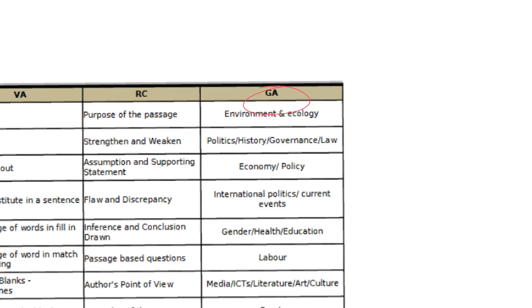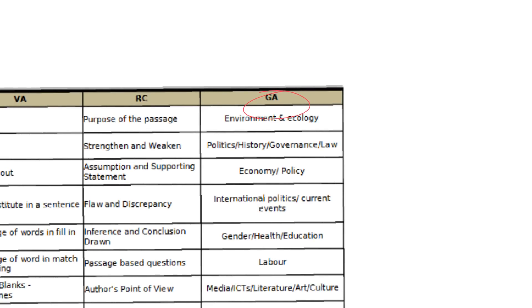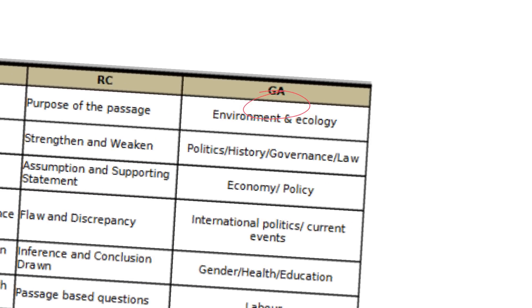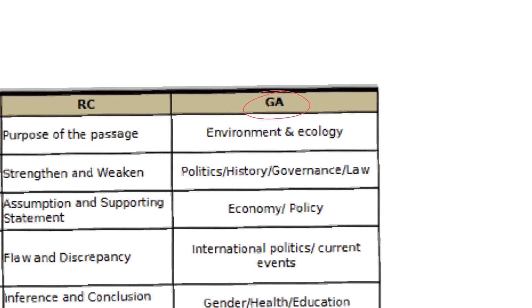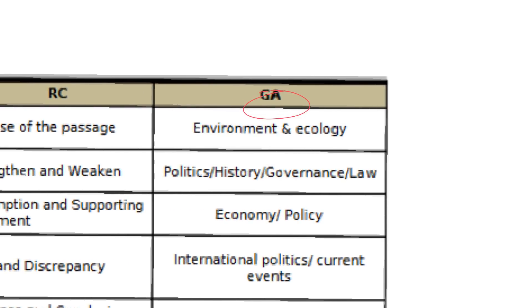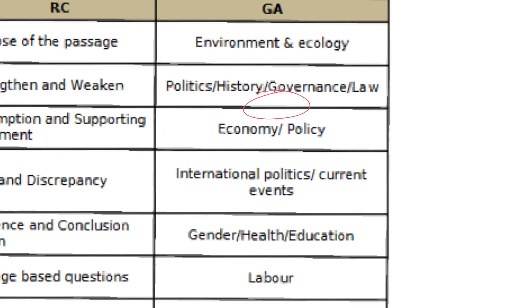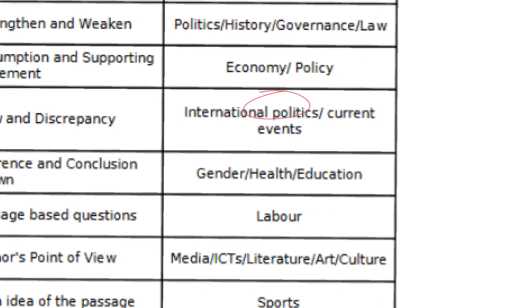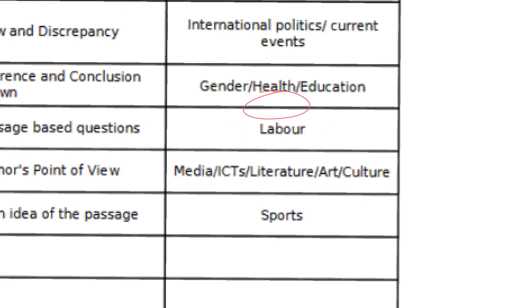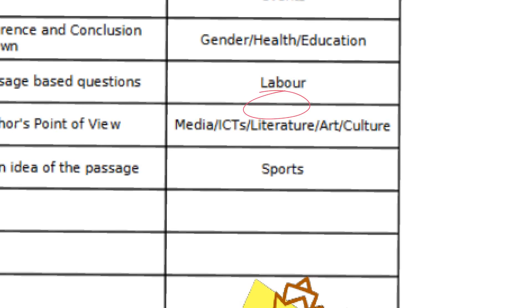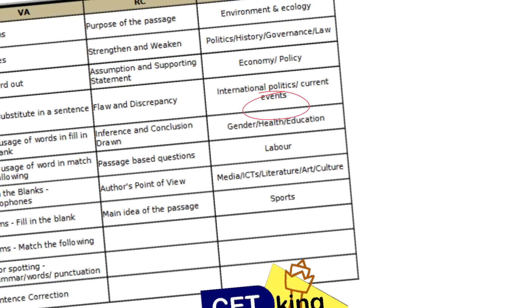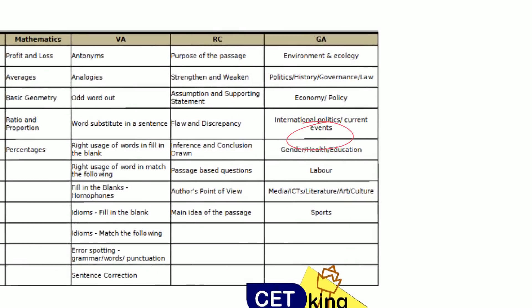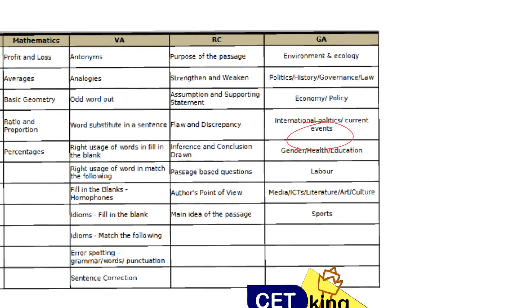The GK section is the main cracking point for the TISS exam and you need to work on it, because there are 40 questions in the GK section — you can't ignore that area. Topics include environment, economy, politics, international politics, gender, labour, media, and sports. These are the topics listed on the TISS website.